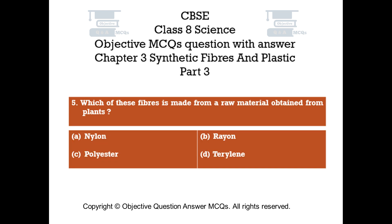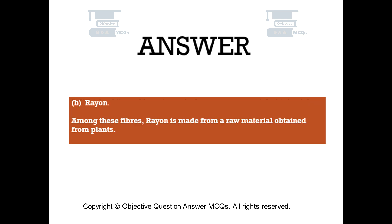Question number five. Which of these fibers is made from a raw material obtained from plants? Option A: nylon. Option B: rayon. Option C: polyester. Option D: terrylene. The right answer is option B — rayon. Among these fibers, rayon is made from a raw material obtained from plants.